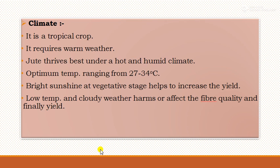In terms of climate, both Tossa and white jute require similar climatic conditions. Jute is a tropical crop that requires warm weather — it thrives best under hot and humid climate. The optimum temperature ranges from 27 to 34 degrees Celsius. Bright sunshine at the vegetative stage helps increase fiber yield, while low temperature and cloudy weather adversely affect the quality and final yield of the fiber.